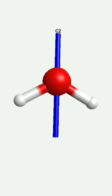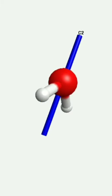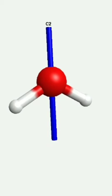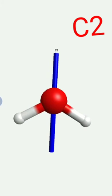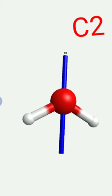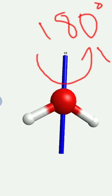This blue colored line represents C2 axis, two fold symmetry axis as it is passing through oxygen atom. If we rotate water molecule around this, we will get similar configuration after 180 degree rotation.